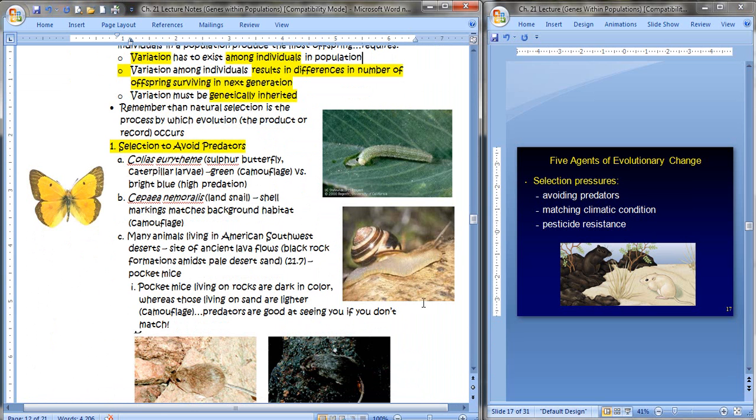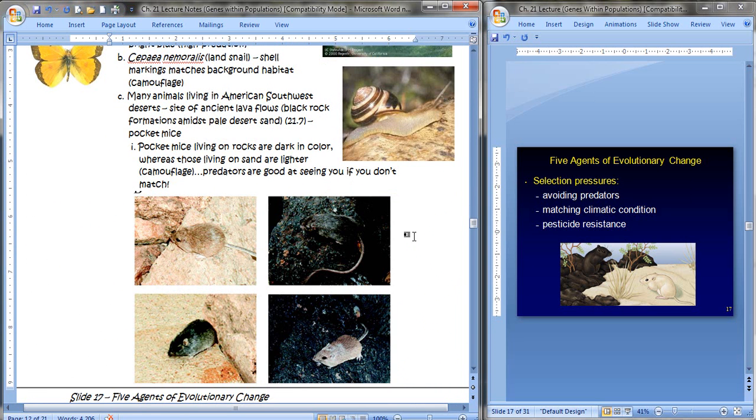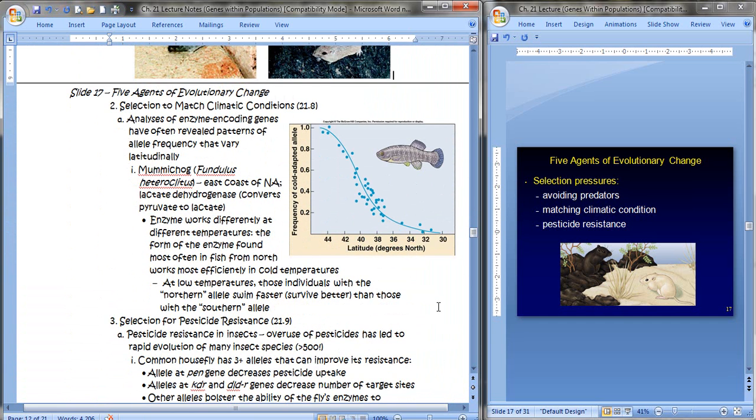Another example is a land snail. The shell markings will match the background that it inhabits, another form of camouflage. Another example that I really enjoy are many rodents in the American Southwest. In this area, it's a site of ancient lava flows where you get this black rock formation all along or within the very pale desert sand. And pocket mice come in two color variations. You've got the light colored pocket mice, which of course blend in very nicely with the sandy environment. And then you have these dark or black pocket mice that do better on the lava or the rock formations. So pretty much you're going to try to stick to the background that fits your color because predators are really good at seeing you if you don't match your background.